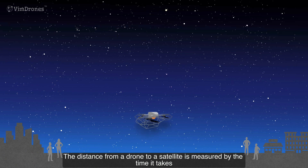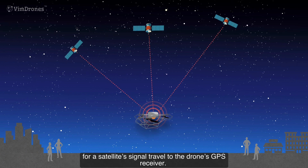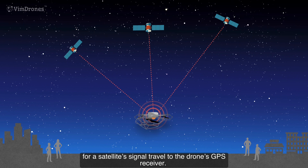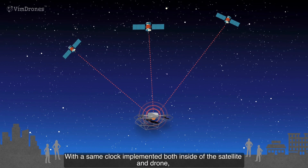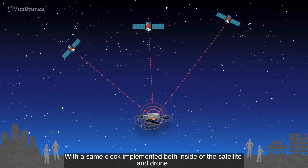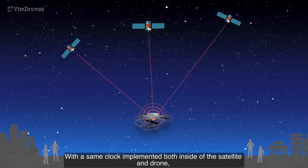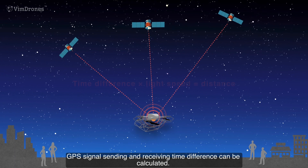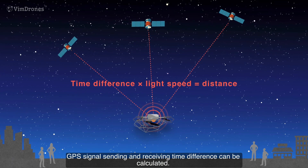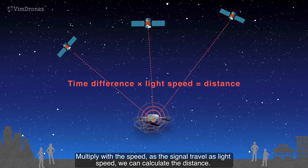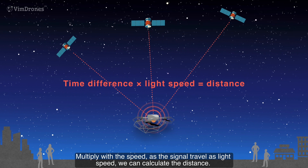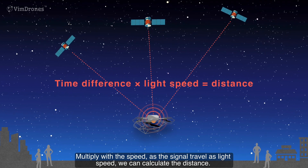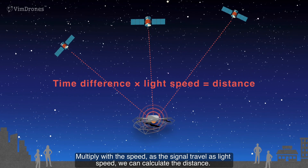The distance from a drone to a satellite is measured by the time it takes for a satellite signal to travel to the drone's GPS receiver. With the same clock implemented both inside the satellite and drone, GPS signal sending and receiving time difference can be calculated. Multiplied by the speed — as the signal travels at light speed — we can calculate the distance.